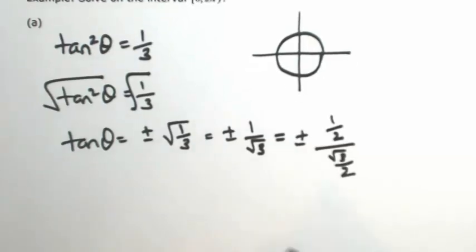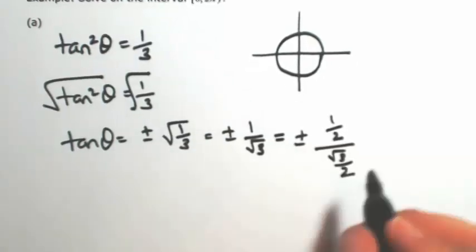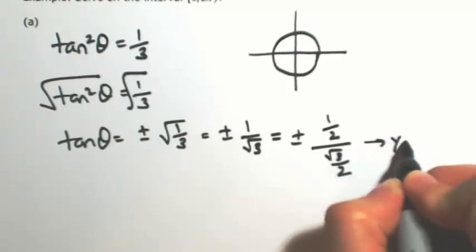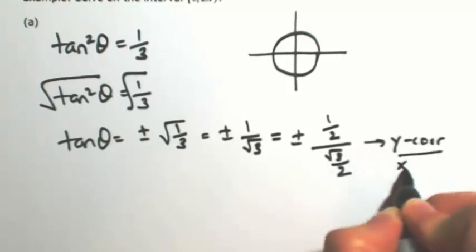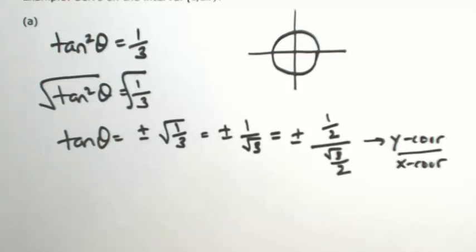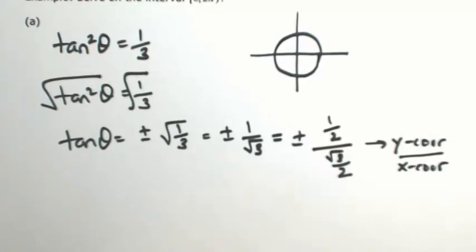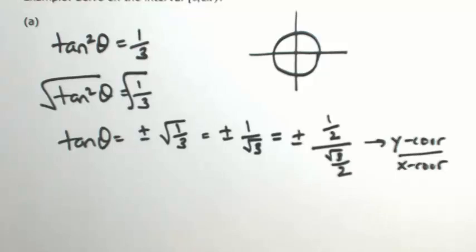The tangent of theta is the y coordinate over the x coordinate. So where I'm looking on the unit circle is where the y coordinate is plus or minus 1 half, and where the x coordinate is plus or minus square root of 3 over 2. Since it's plus or minus, that can happen in all four quadrants.